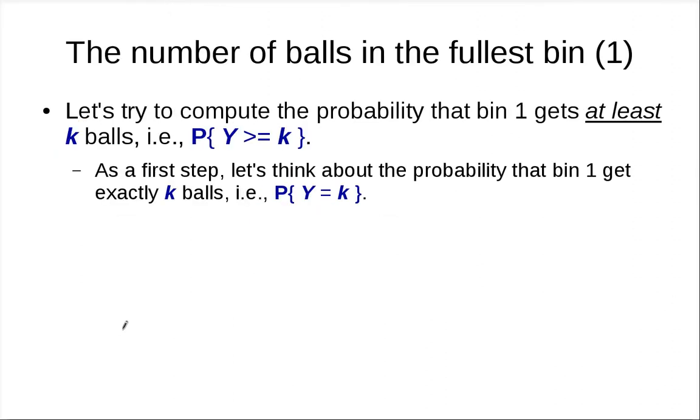So what we like to say is that we would like to compute the probability that bin 1 get at least k balls. So we have already defined random variable Y. We want to compute this. But as a first step, and this is the question of the segment.